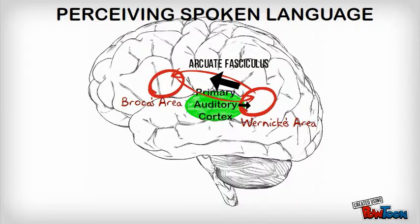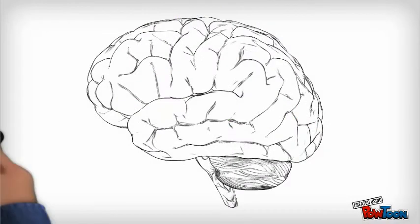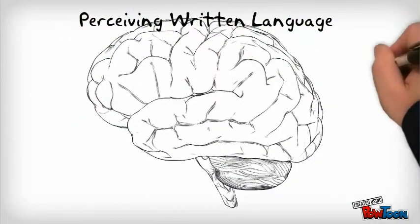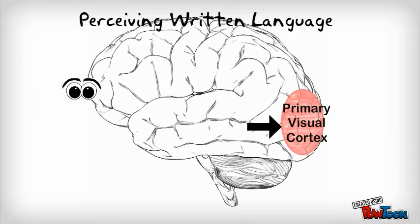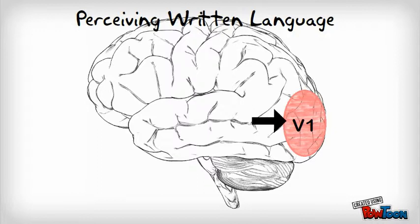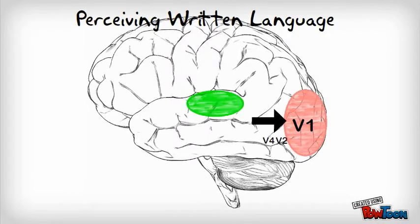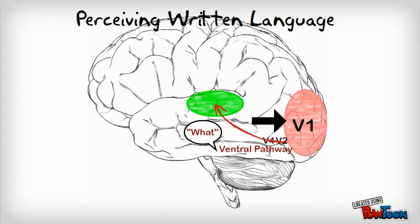Perceiving written language, the pathways have an extra step. The written words are perceived when the primary visual cortex in the occipital lobe receives visual stimuli from the eyes. This cortex is called V1. The stimulation is then transferred down the ventral pathway through cortical areas V2 and V4. This is called the what pathway that recognizes the letters and forms them into words.